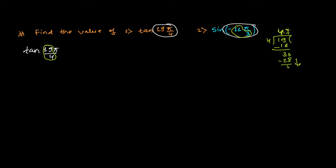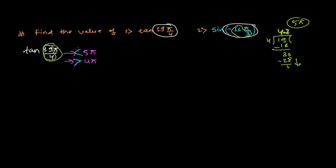We got 4.75, which means — since π represents 180 degrees — 19π/4 ≈ 4.75π. This is very close to 5π. So 19π/4 is greater than 4π but less than 5π.